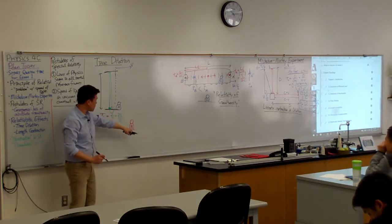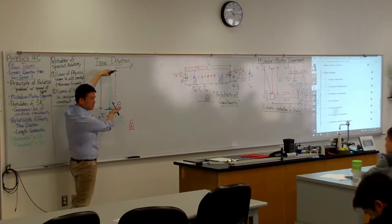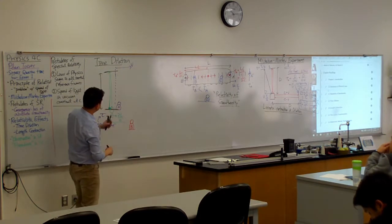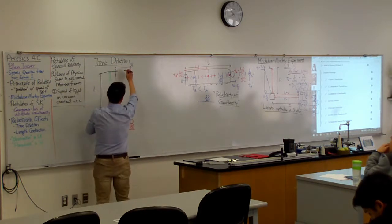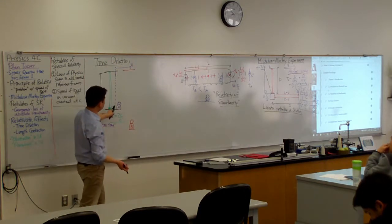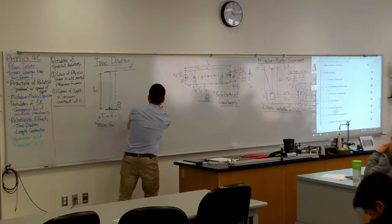From the perspective of B, are these two mirrors staying stationary? No, they are moving, right? As this light reaches here, this mirror actually moves over here. And in the amount of time for the light to come back, this bottom mirror has moved even more to over here.